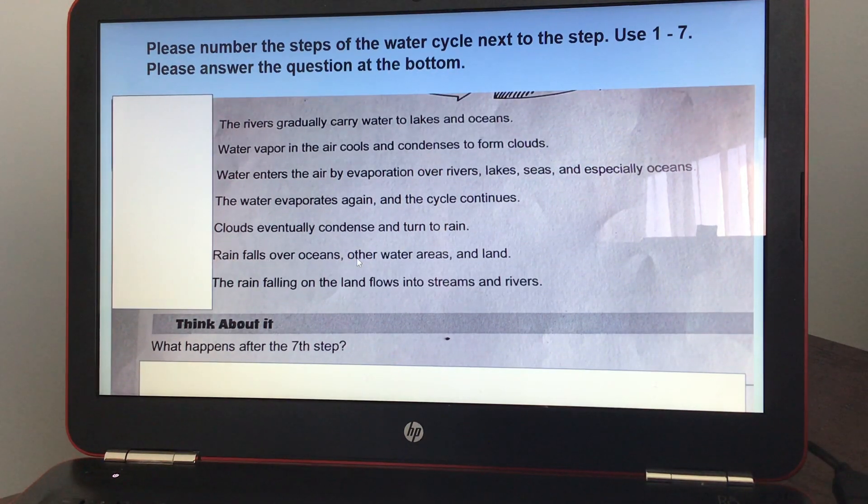Number four should be right here. Rain falls over oceans, other water areas, and land. Number five should be right here. The rain falling on the land flows into streams and rivers. And six should be the rivers gradually carry water to lakes and oceans.